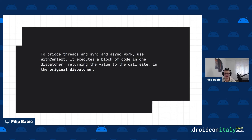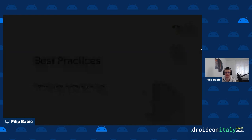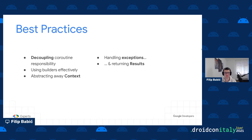In terms of best practices and optimizing your code, one key thing is to decouple responsibility for coroutines. We saw a presenter holding all coroutine logic — scope, context, cancellation — and we need to evaluate whether that makes sense. We'll also cover using builders effectively, abstracting context by pushing it downstream, and exception handling with the result pattern.